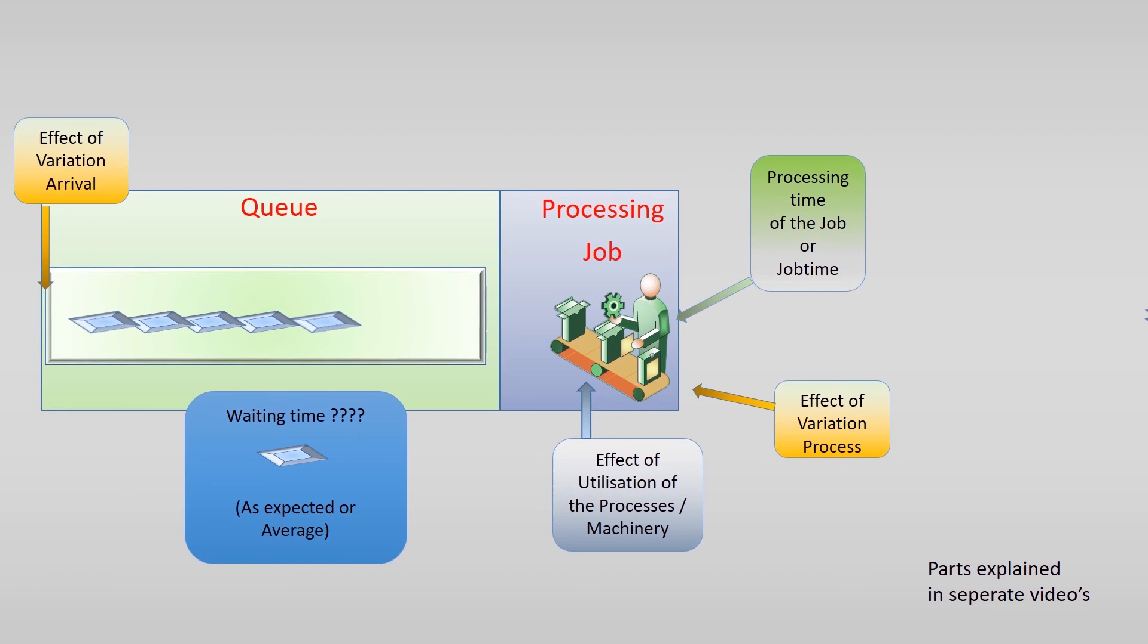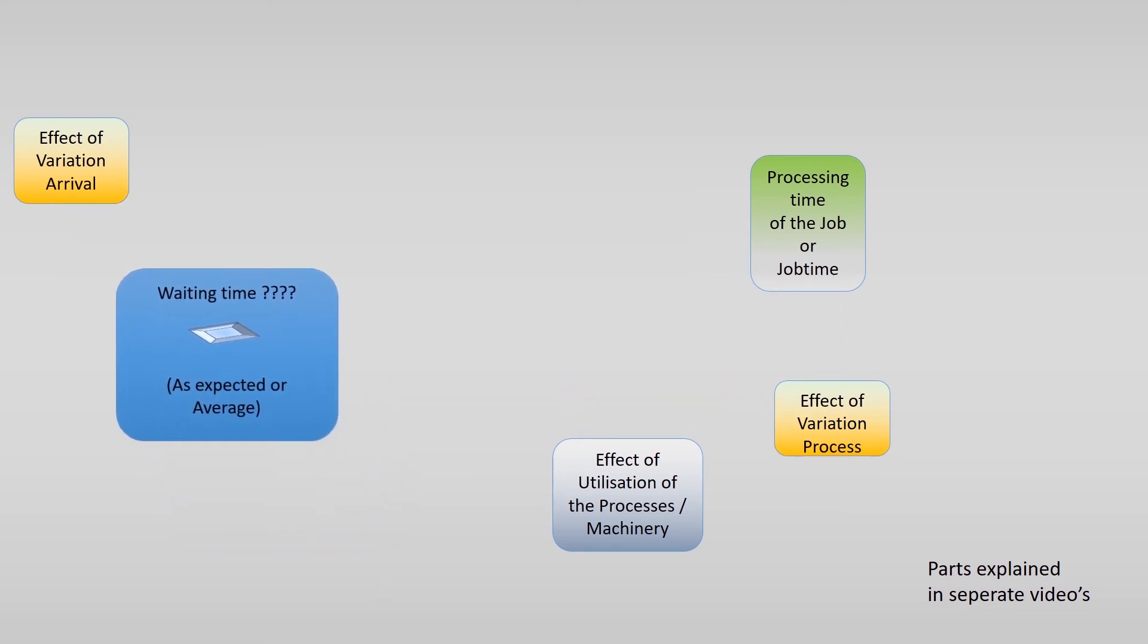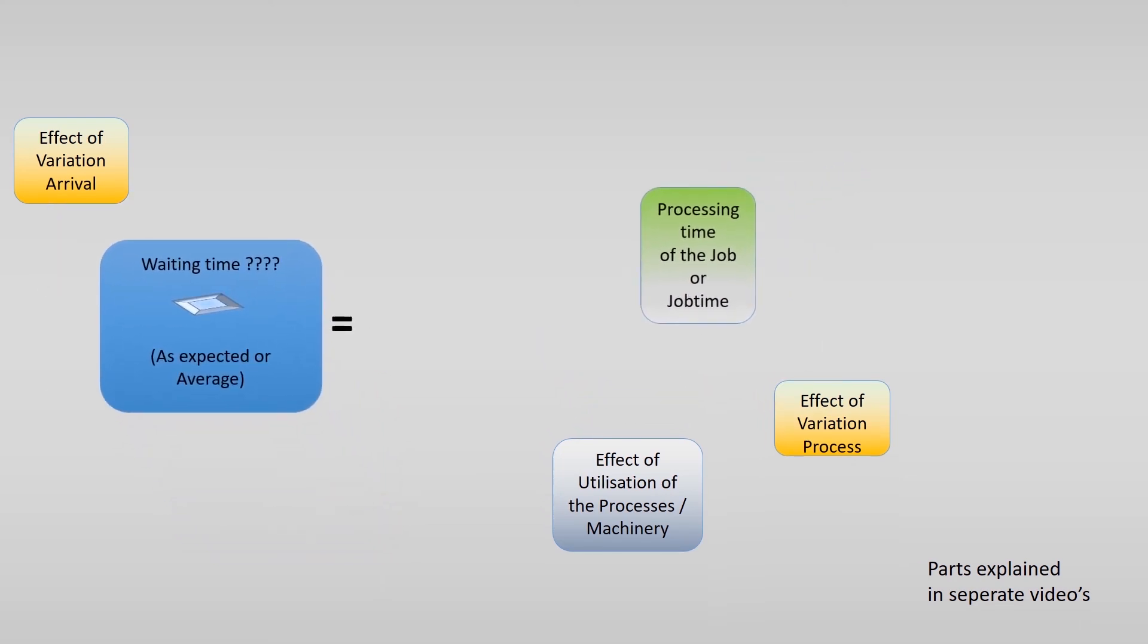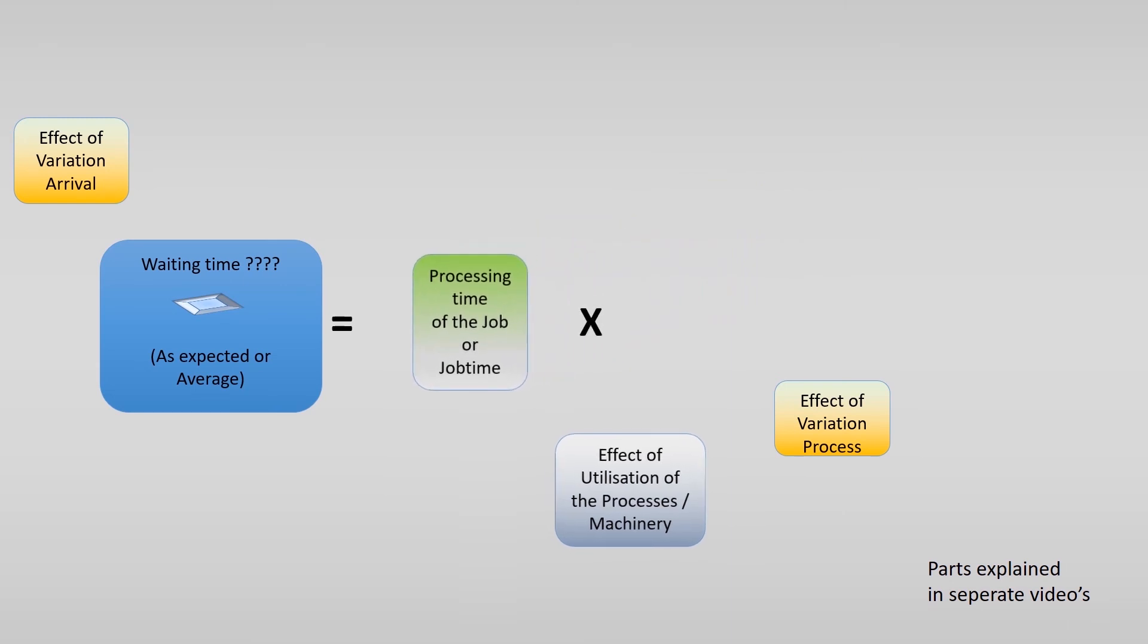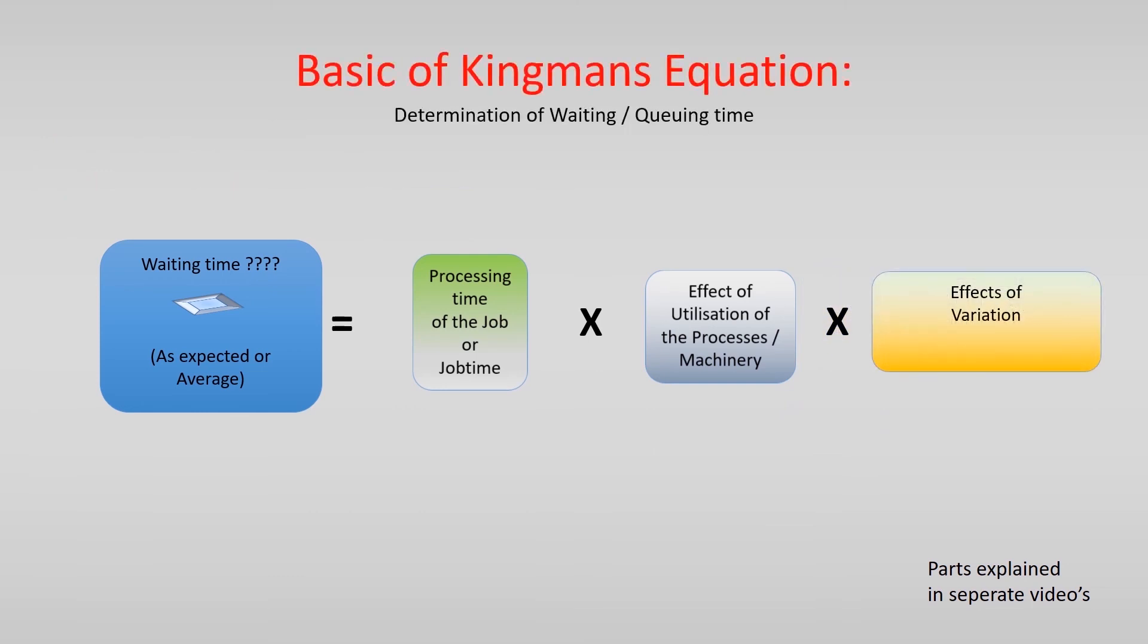If we take these three parts together, we see the founding layer of Kingman's equation to calculate an approximation of the waiting times in a queue. The average waiting time equals the job time multiplied by the effects of utilization of the process and the effects of variation in input and process times.